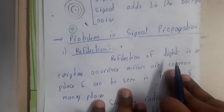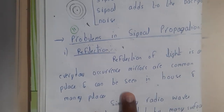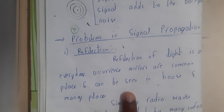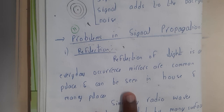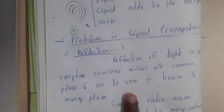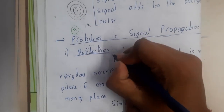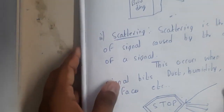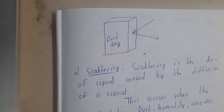Hello guys, we are back with our next lecture. In this lecture, let us go through the problems in signal propagation. Whenever the signal is going from one place to another, will there be any problems? Yes, there are some problems. The first problem is nothing but reflection. I'll be going through the example first, then the theory, so you'll have a clear idea.